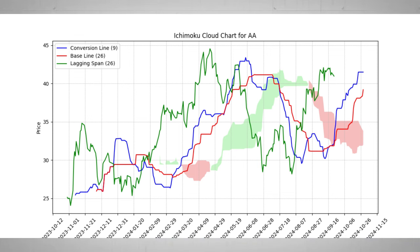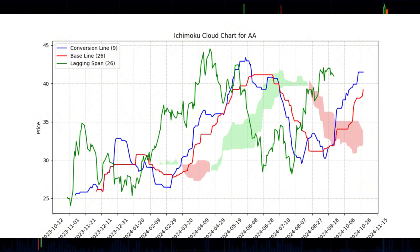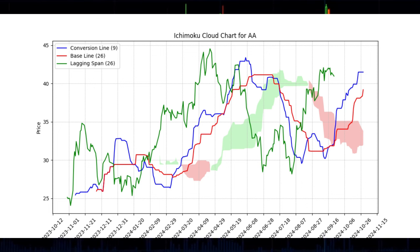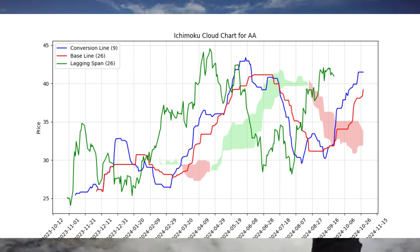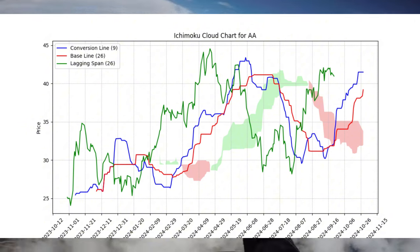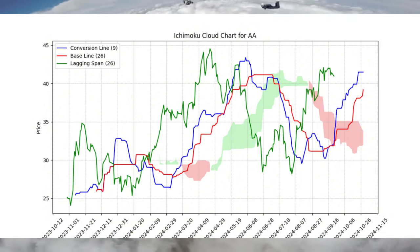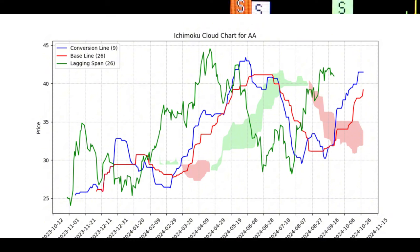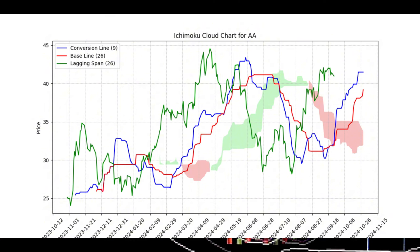The cloud itself shifts colors as trends strengthen or weaken. If prices hover within the cloud, the stock is in a consolidation phase, and breakout traders may watch closely for movement either above or below the cloud to signal the next trend. It should be fun for you to go look at the current price of AI and compare it with the data from the day we wrote this script, October 28, 2024.